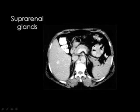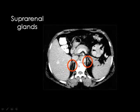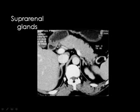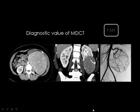Look for the suprarenal glands — they have an inverted Y shape. This is the left suprarenal gland and this is the right suprarenal gland, located immediately above the kidneys in a characteristic configuration.